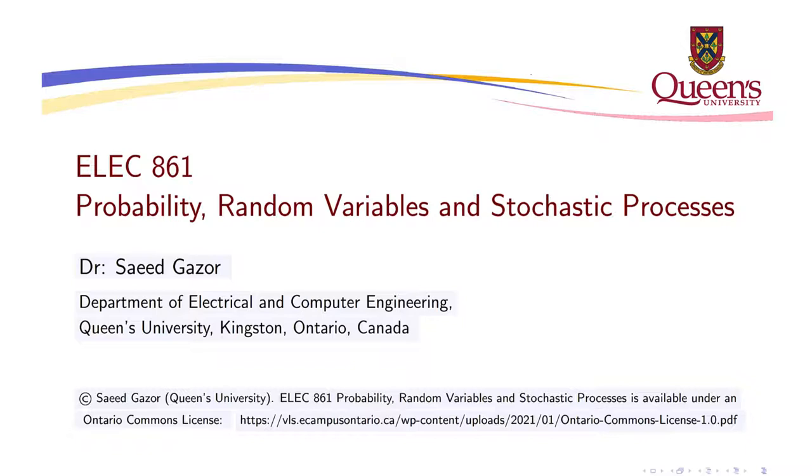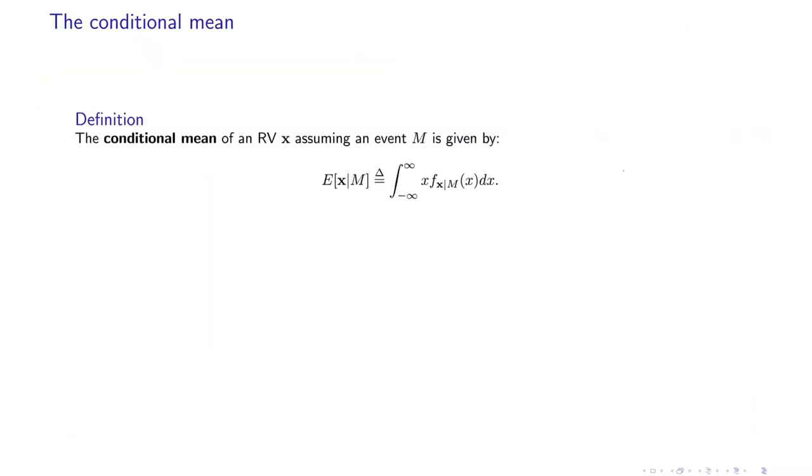Conditional expectation is nothing more than using the same extension. Basically, here we define the conditional mean of a random variable assuming an event. The definition is that instead of using the distribution of X, we use the conditional distribution of X.